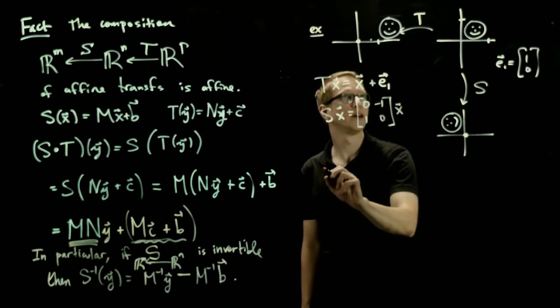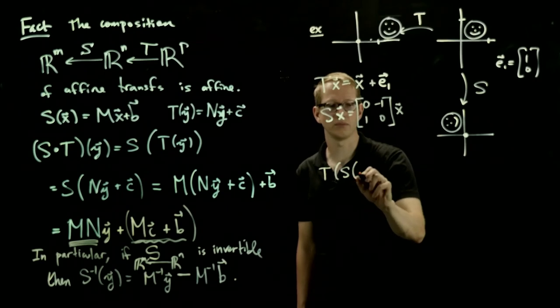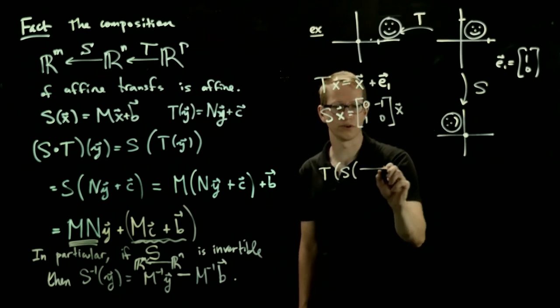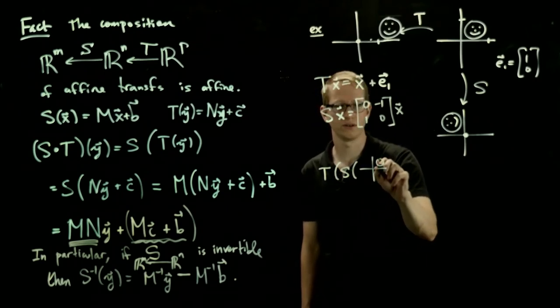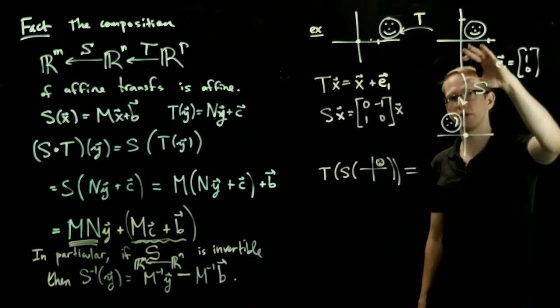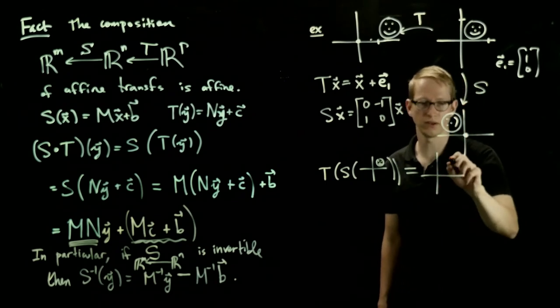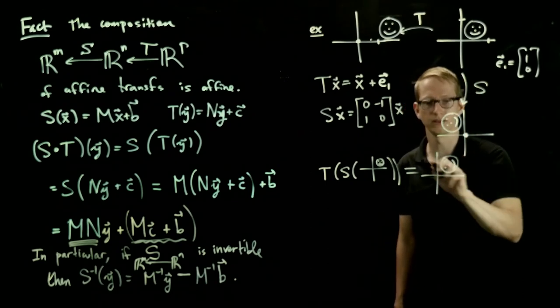So if we apply first T and S applied to this picture, let's start with our initial configuration. Then what happens after you apply this? Well, first you rotate, and then you translate. So this translates everything to something that looks like this.